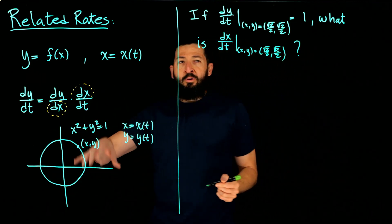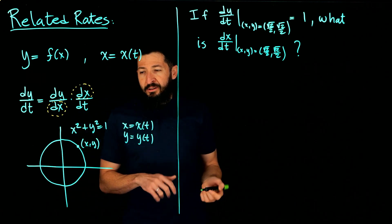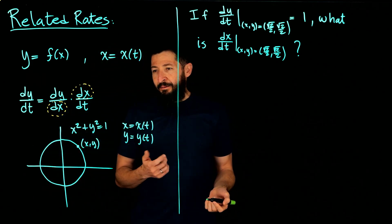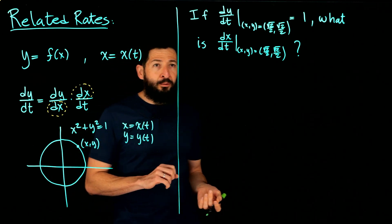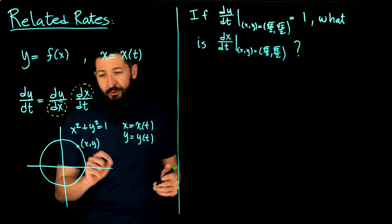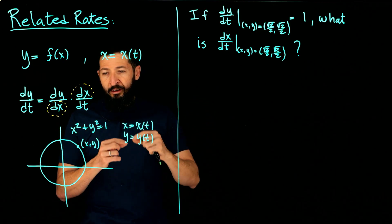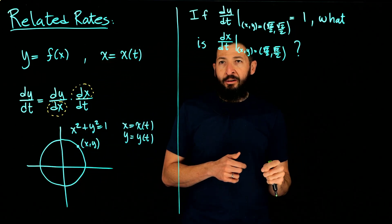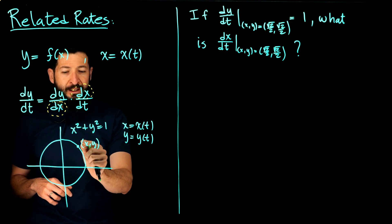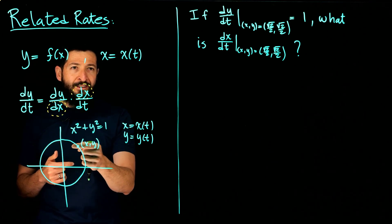We don't know exactly what the functions are, and that's not important here. If we knew the functions we could plug them in and take derivatives directly. What we're looking for is to do this using the chain rule. We just know that at (√2/2, √2/2), the particle is moving in the y direction at one unit per unit of time. Since the particle is moving up, you'd expect it must be moving in the negative x direction.